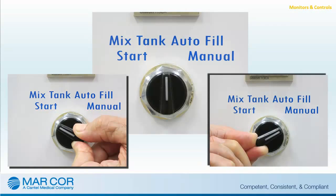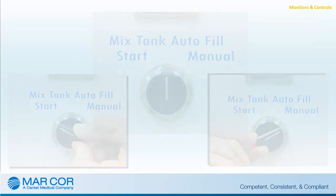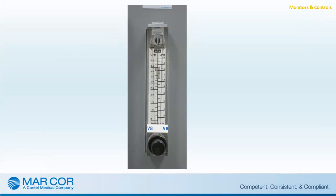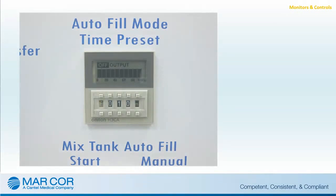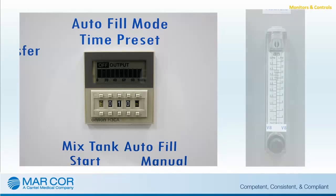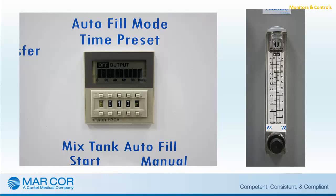When the switch is held in the manual position, the solenoid is activated, allowing water to flow into the mixed tank as long as the switch remains held in this position. The flow meter scale allows visual settings between 0.5 and 5 gallons per minute. The auto-fill flow meter includes an integral needle valve to provide visual flow rate indication and adjustment. Set the auto-fill mode timer for the length of time needed in combination with the previously set fill rate to fill the mixed tank to the identified water volume.